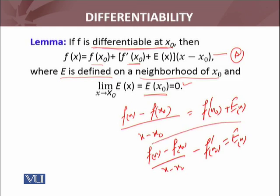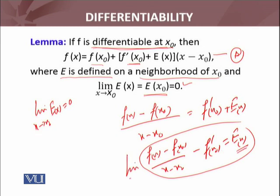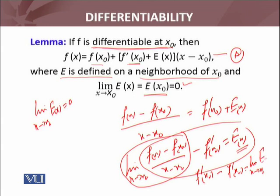First of all, we see that for this function E(x), whether limit as x approaches x₀ of E(x) equals 0 or not. If I take the limit on both sides, on the right hand side limit as x approaches x₀, this limit I know for differentiable functions will equal f'(x₀) minus this constant function f'(x₀) equals limit as x approaches x₀ of E(x), so that will be 0.